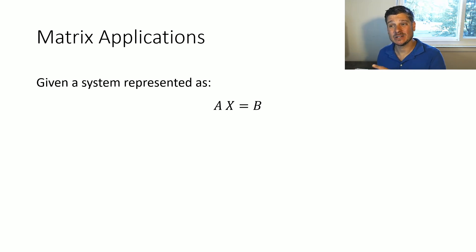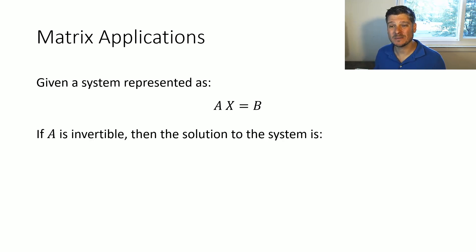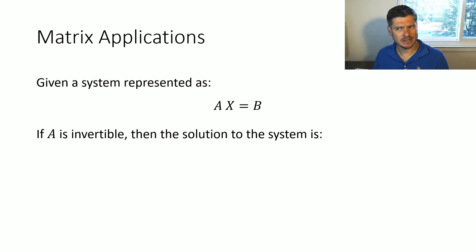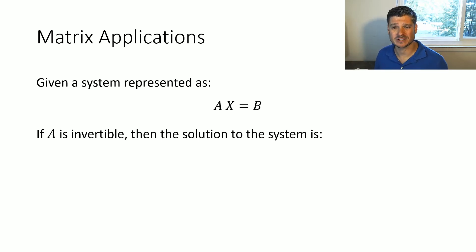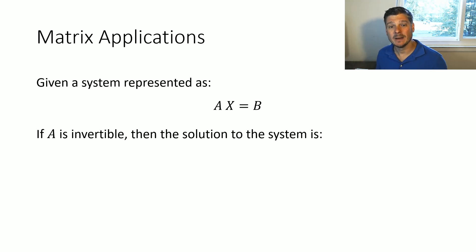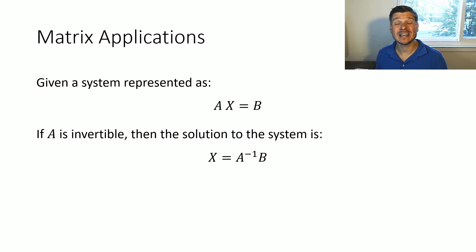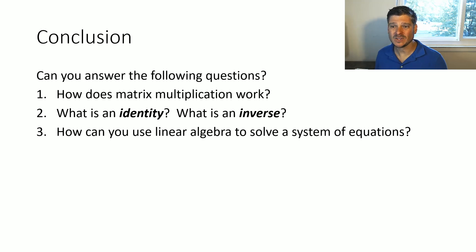The idea here is that given any system represented as Ax equals b, no matter what size it is, as long as we have square matrices and A is invertible, the solution is always x equals A-inverse times b. And if a matrix doesn't have an inverse, does that mean the system doesn't have a solution? That's something we'll explore more as we learn about the Invertible Matrix Theorem — those are good questions we should be asking ourselves.